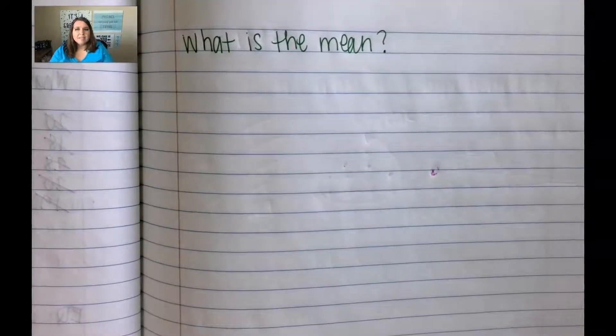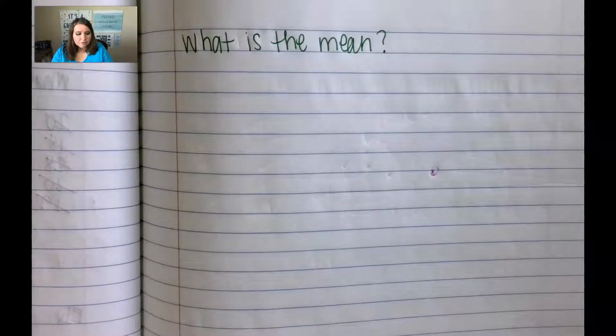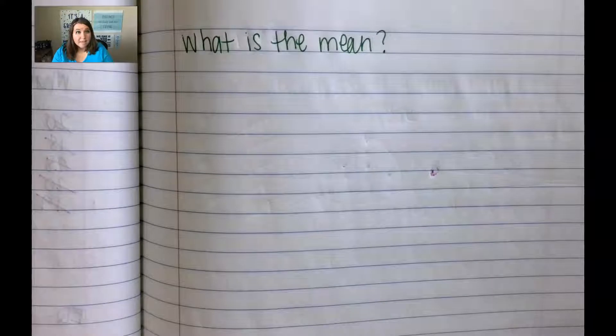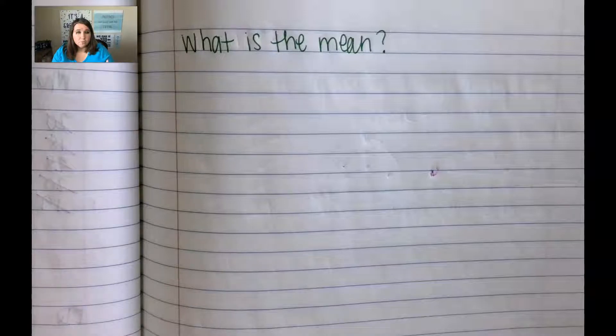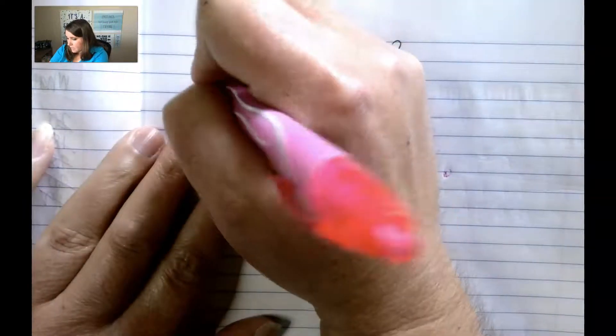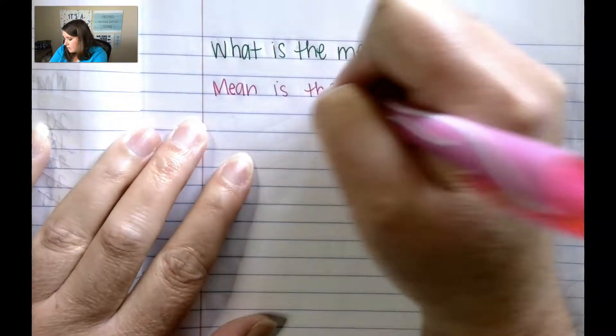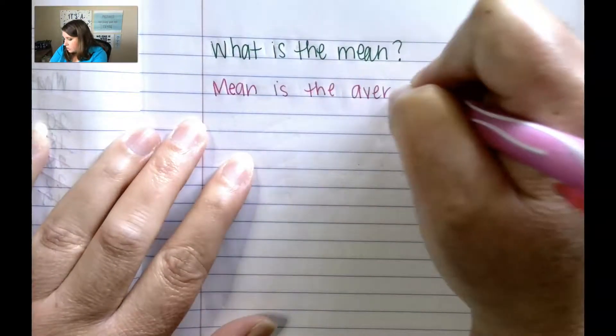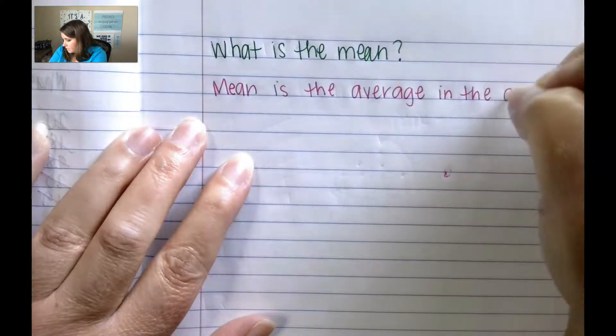Well, the mean is an average. So the mean is the average of what? Well, of the data. So after you collect a bunch of data points, you can find which number is the average of all of the data points. The mean is the average in the data set.